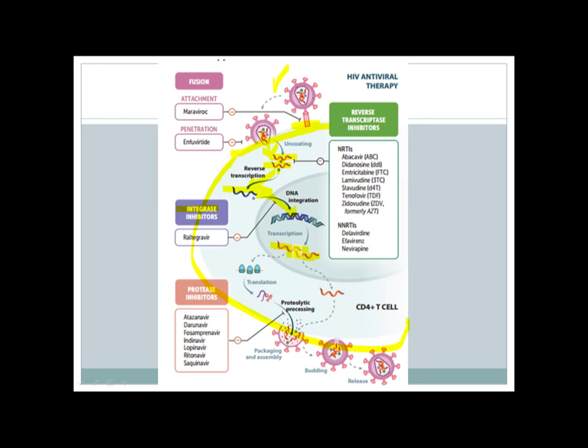Some of the RNA copies are translated and some are not. The ones which are translated produce multiple proteins such as reverse transcriptase, capsid proteins, and others. Those undergo proteolytic processing with the help of enzymes called proteases. After this processing, the proteins are ready, and the RNA and proteins get together to form the complete virion after packaging and assembly. Then the HIV gets out of the CD4 positive T cell and is released.